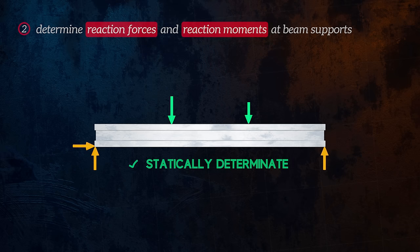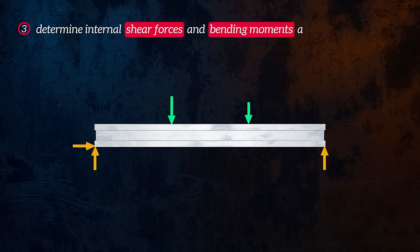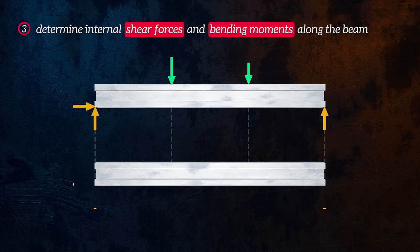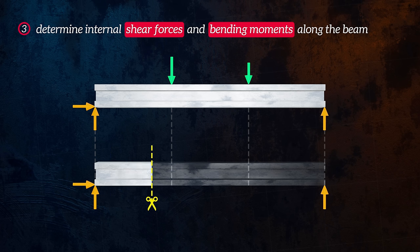Once we have calculated all of the reaction loads, the third and final step is to figure out the internal shear forces and bending moments at every location along the beam. To do this, we will use the concept of equilibrium again. If we cut our beam at any location, the internal forces and moments need to cancel out the external forces and moments so that equilibrium is maintained. All we need to do is start from one side of the beam and move the location of the cut along the beam, calculating the shear forces and bending moments as we go.